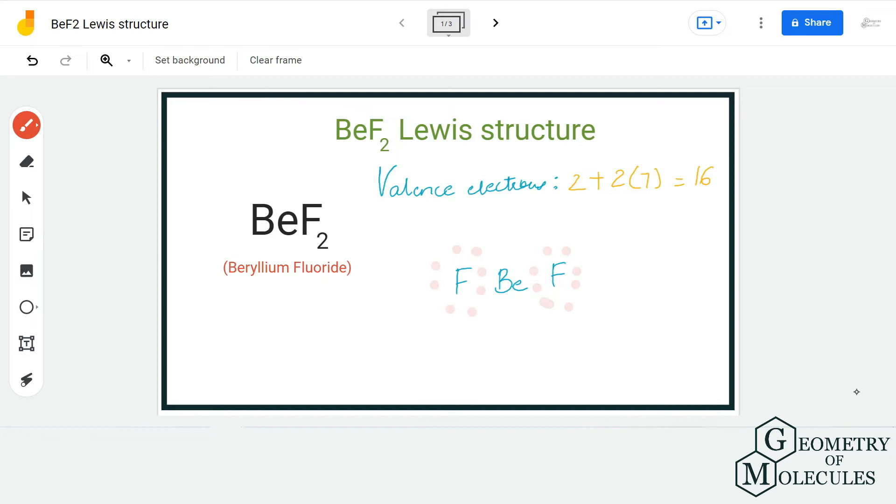Doing that, we will be using up all our valence electrons and as a result there is a single bond between beryllium and fluorine. Now a lot of people might question why doesn't beryllium have a complete octet.